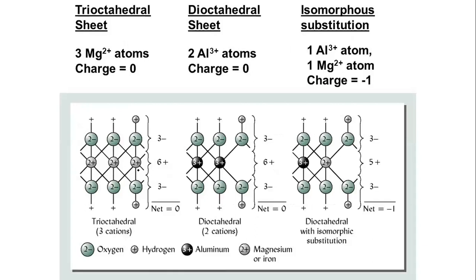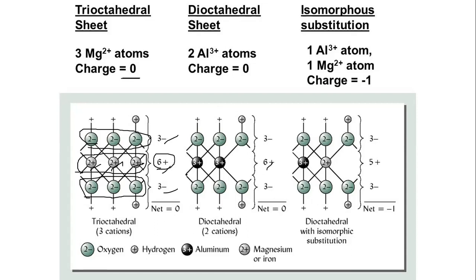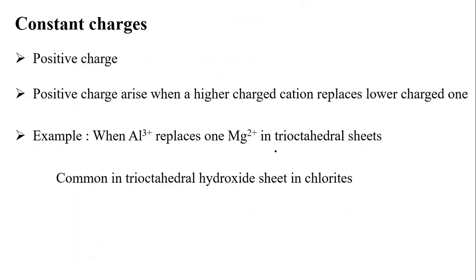In the trioctahedral sheet with no substitution, the charge is zero — three magnesiums give plus six and oxygens give minus six, balanced. In the dioctahedral sheet with two aluminiums, the same balance applies. But when magnesium substitutes aluminium in the dioctahedral sheet, there is a net negative charge of minus one, which is why the clay complex shows negative charge. This is constant, not pH-dependent.